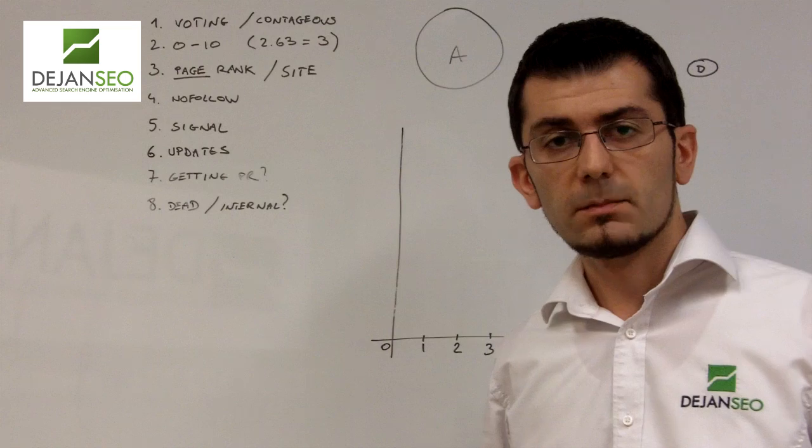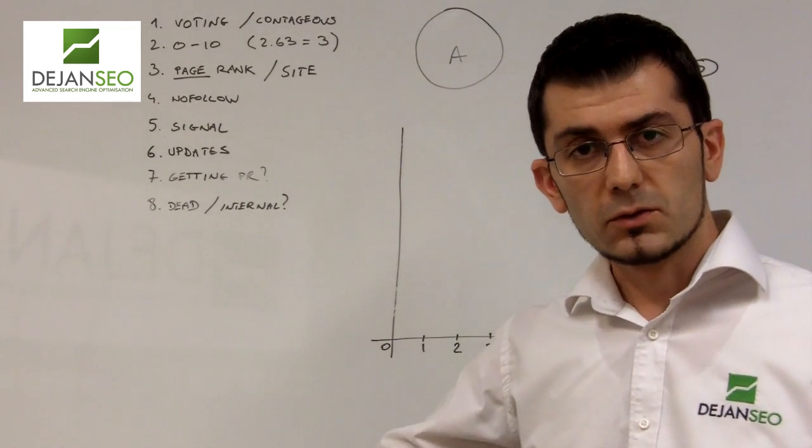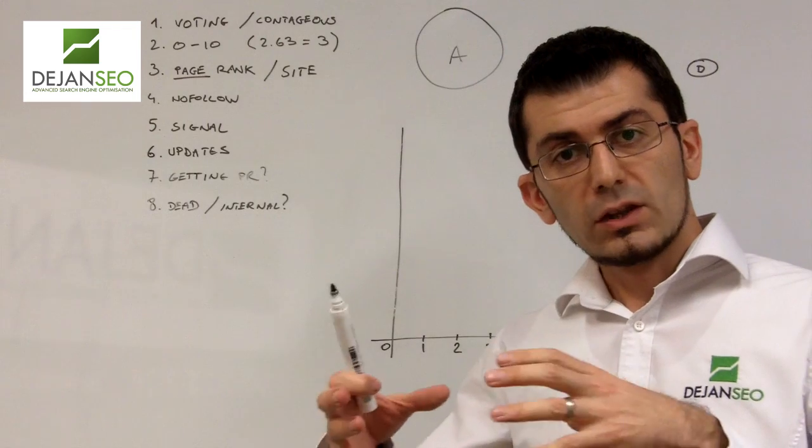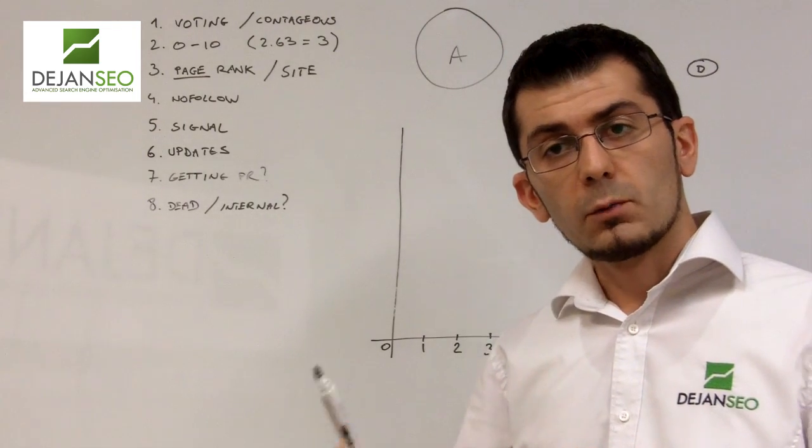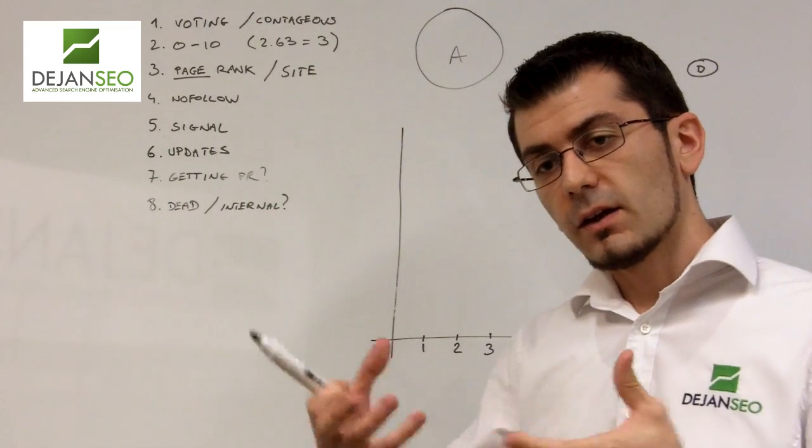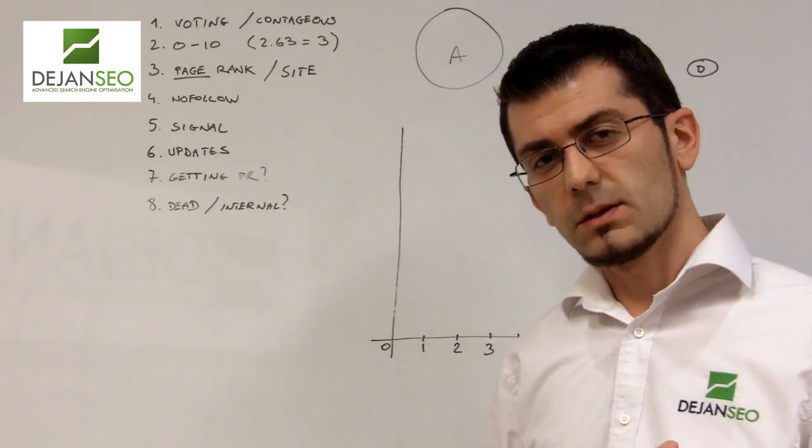PageRank is a voting system invented by Google back in the day when it was called BackRub. The concept is that by observing the link graph on the web we can ascertain how pages interact and how this voting system works between the pages.